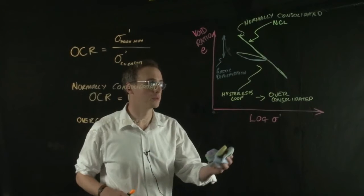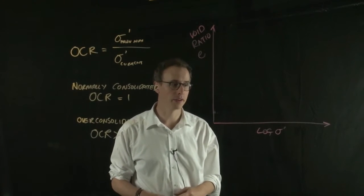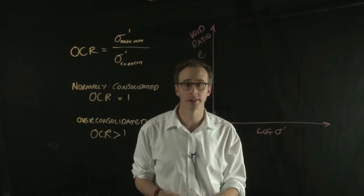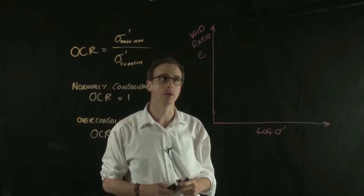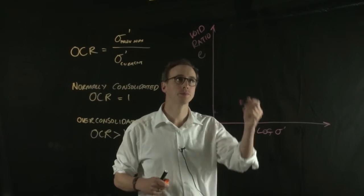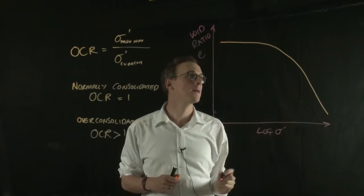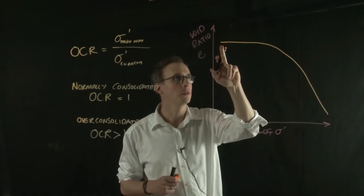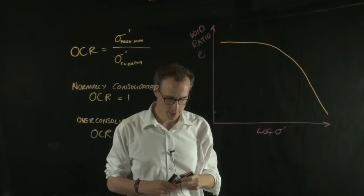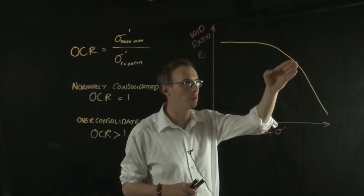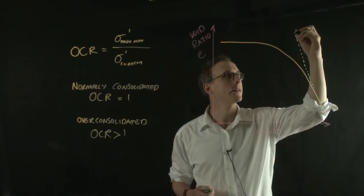To calculate the maximum previous stress that our over consolidated soil has experienced, we take the results of the oedometer test where we have log effective stress on the x-axis and void ratio on the y-axis. Our over consolidated soil sample will exhibit a change in void ratio that looks something like this, where it has an initial void ratio and then it decreases — this is the second part of the hysteresis loop. It essentially rejoins the normal compression line somewhere around here. If we take the gradient of this normal compression line and extend it back, it might look something like this.